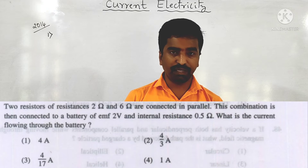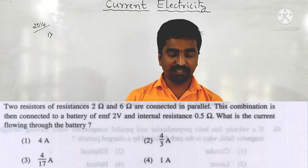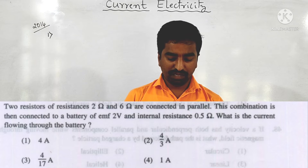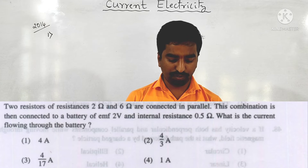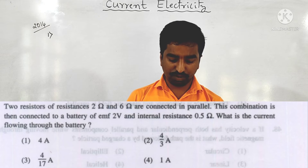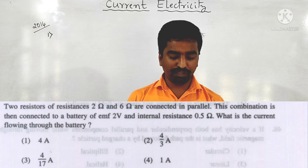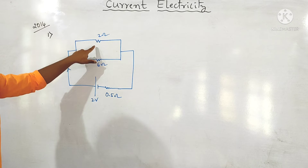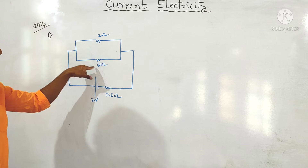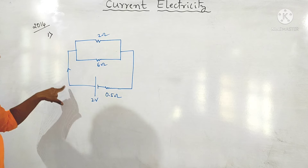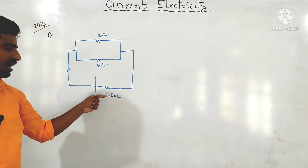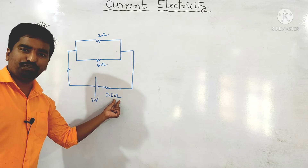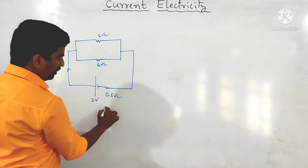Next question from 2014: two resistors of 2 ohm and 6 ohm are connected in parallel. This combination is connected to a battery of EMF 2 volt and internal resistance 0.5 ohm. What is the current flowing through the battery?